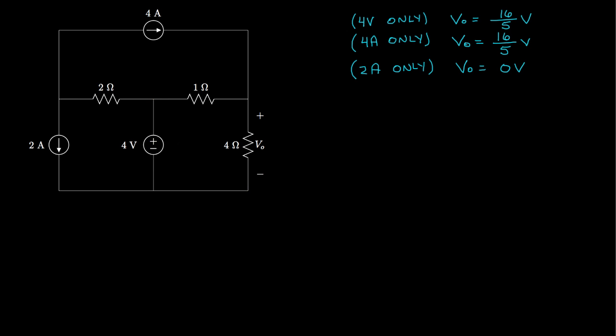With all of the sources back in, the superposition of the output is the sum of the voltages VO due to each individual source, and that adds to 32/5 of a volt.